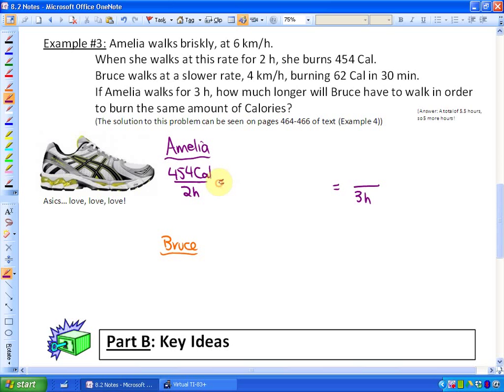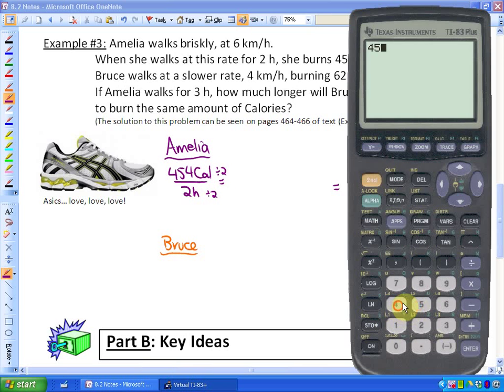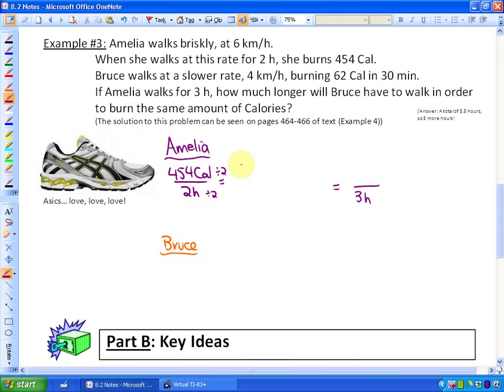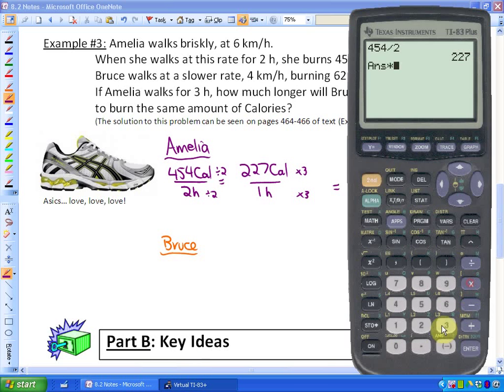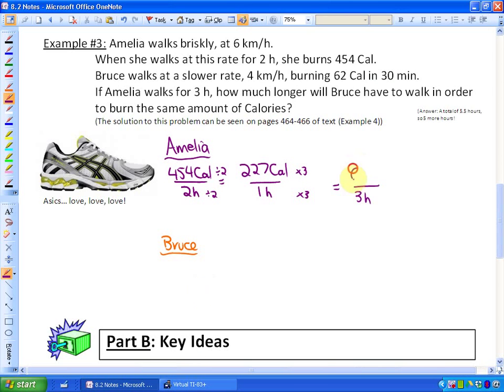So lots of ways you could do this. I'm again going to use a unit rate, so if I divide this by two, so 454 divided by two, I'm going to get a unit rate of how many calories she burns per hour. She burns 227 calories per one hour, which means that if she walked for three hours I could times that by three. Again this is one of many ways to do this. She burns 681 calories.